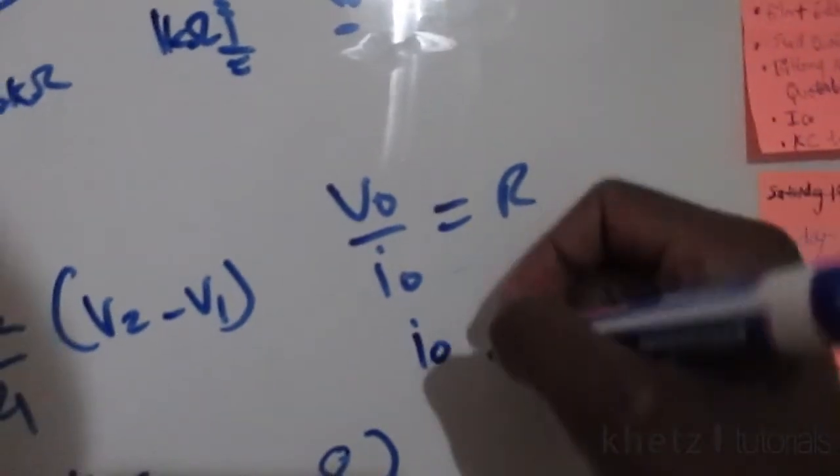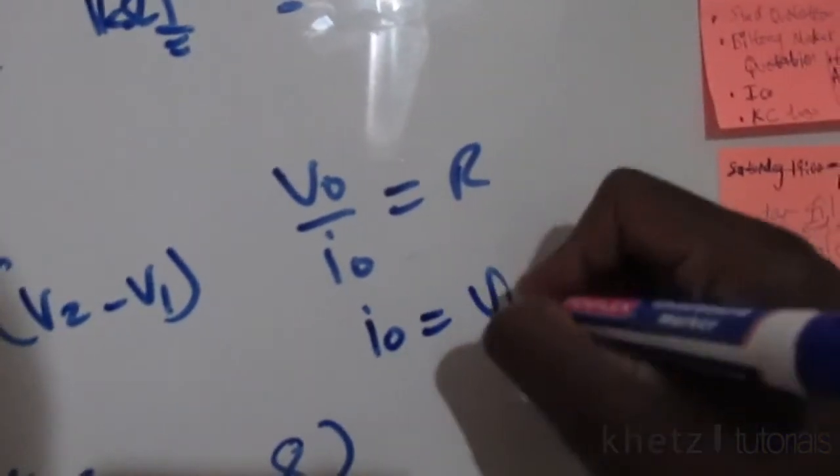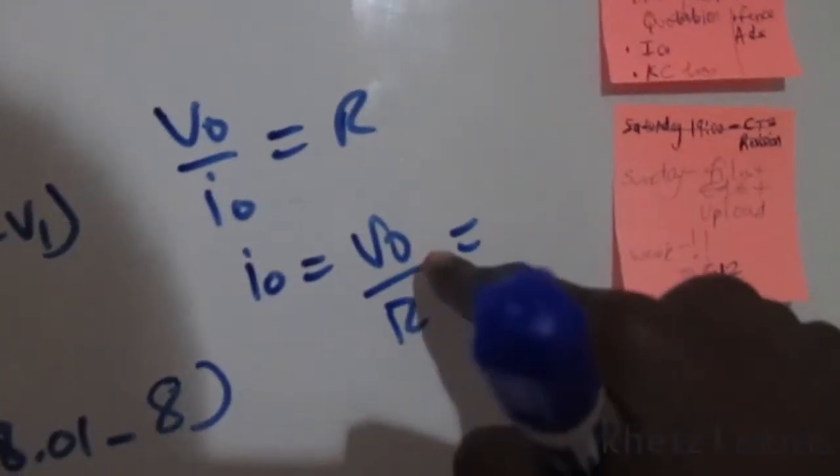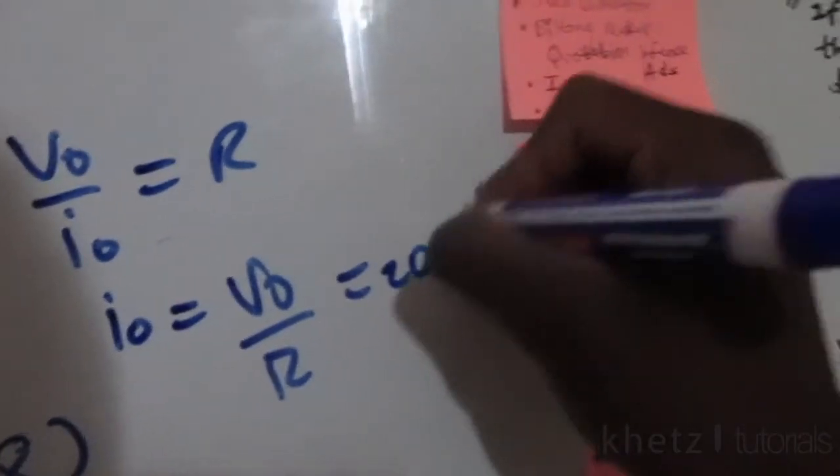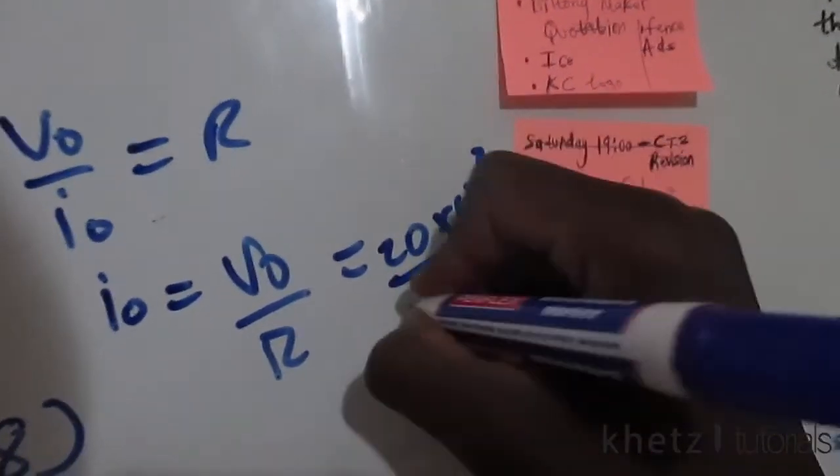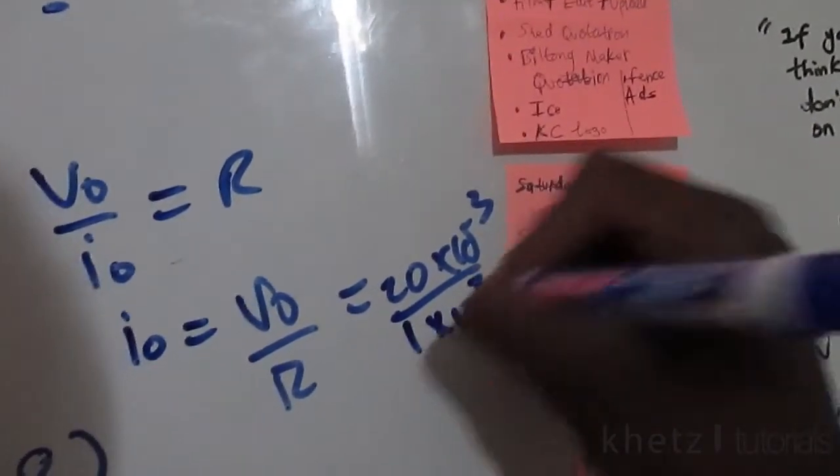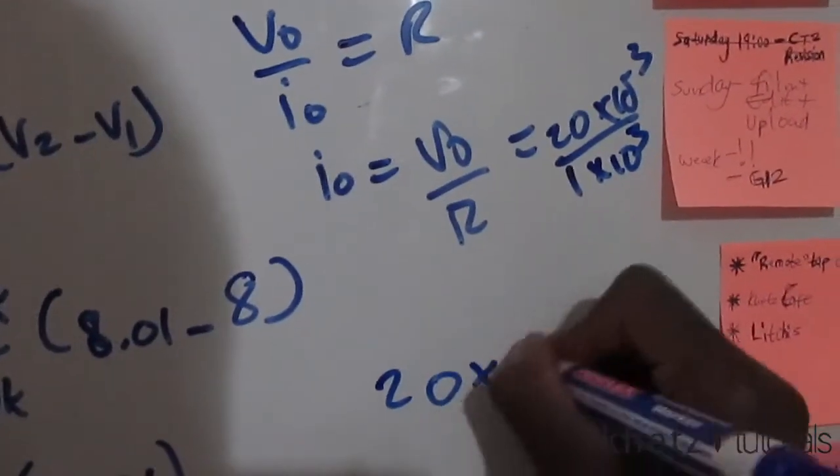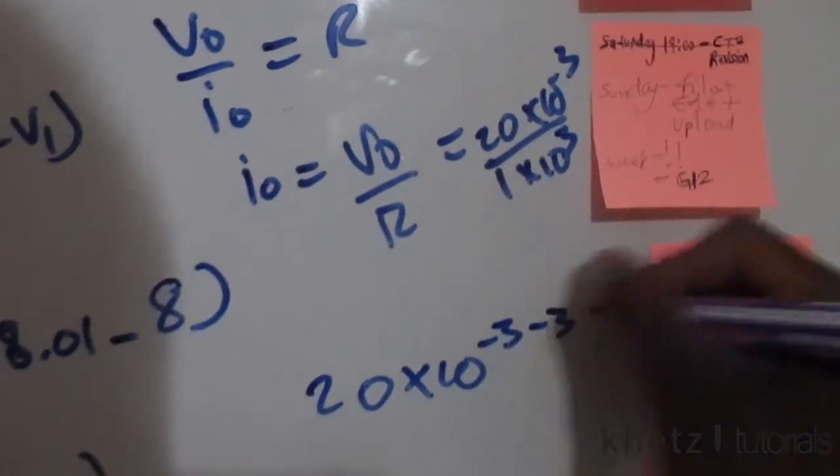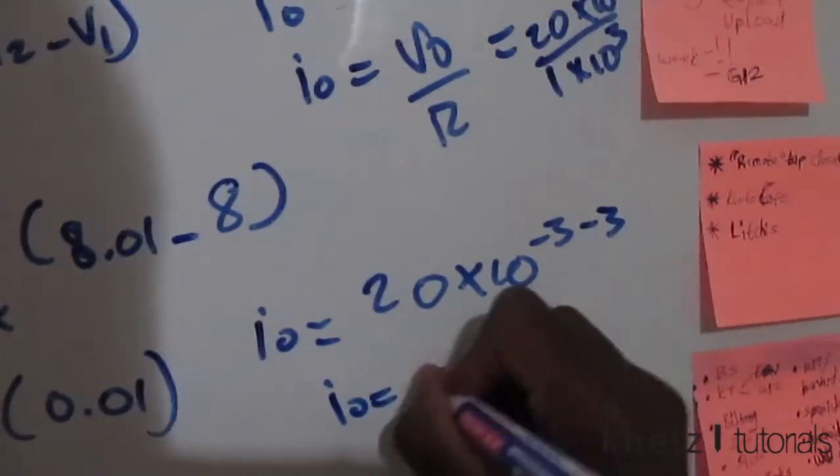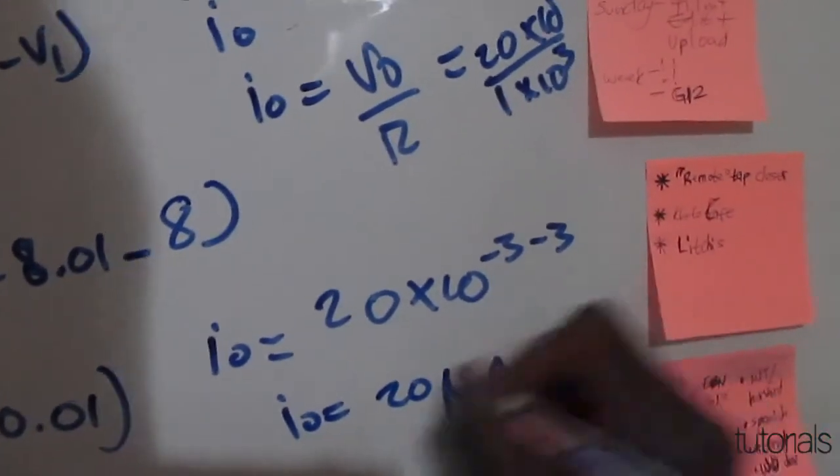So i_o equals Vo divided by R. Now that we found our Vo to be 20 times 10 to the minus 3, divided by a resistor value of 1 times 10 to the 3, we're going to have 20 times 10 to the minus 6, which means our i_o will be 20 microamperes.